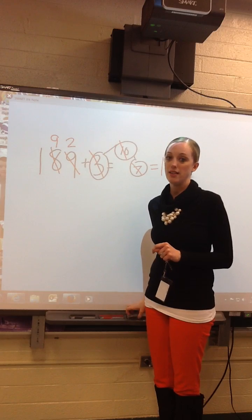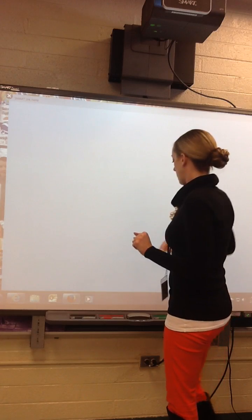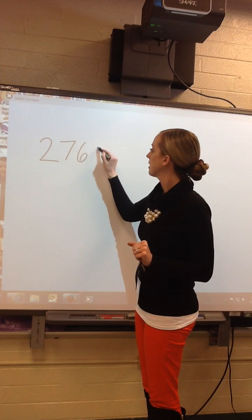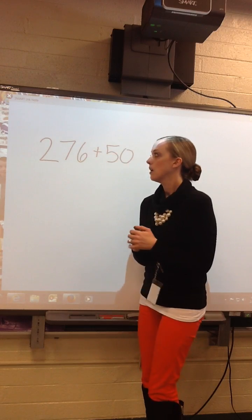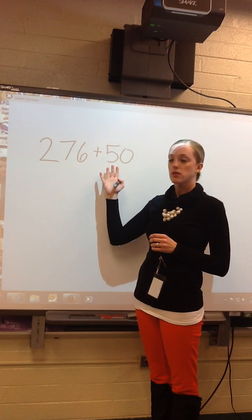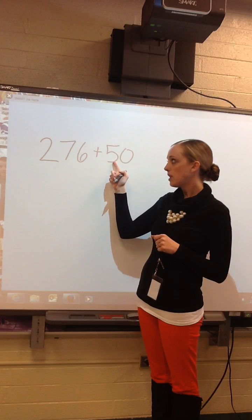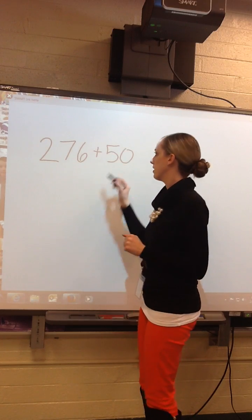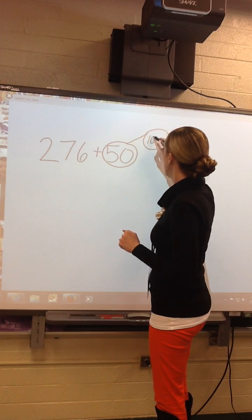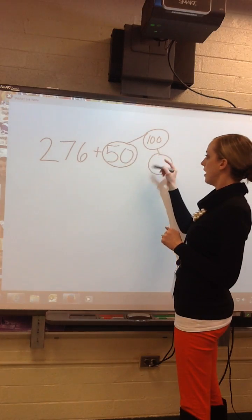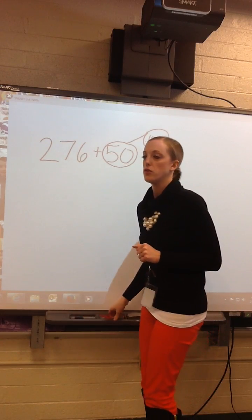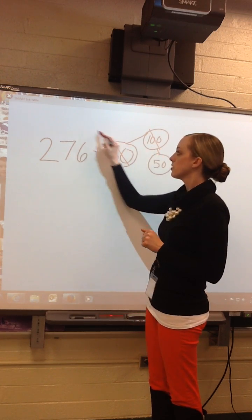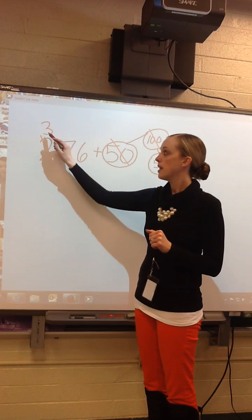Now I'm going to do our last strategy, which is strategy 5. If I had 276 plus 50 — what am I adding? Hundreds, tens, or ones? In this case, I'm adding tens. 5 tens and 7 tens would cause me to regroup. So instead of regrouping, I'm going to make this into 100. Use your number bond: 50 and 50 make 100. So now I'm going to add 276 plus 100 — go over to your hundreds column and add 100. Now I have 376.